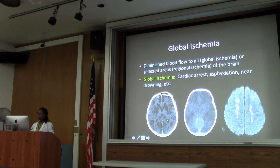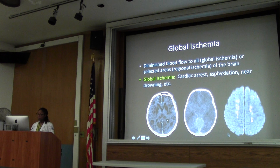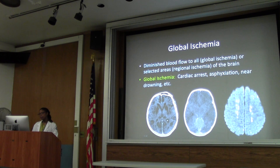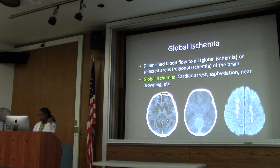These patients are also prone to watershed infarcts. On diffusion MRI, you can see hyperdense areas representing infarcts in the watershed regions of the brain - that's very common. This is a bad prognostic sign on CT. Patients hardly ever come back from this, unfortunately.